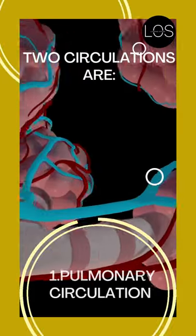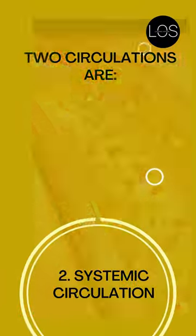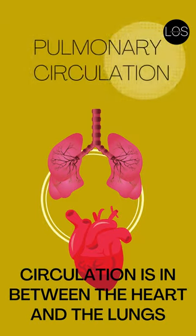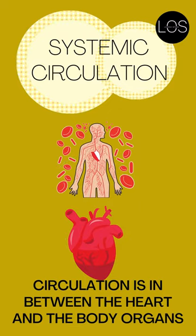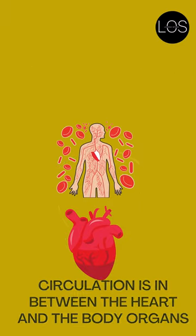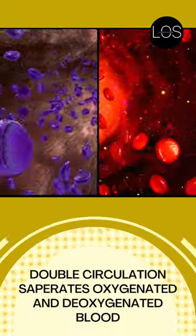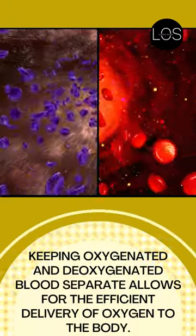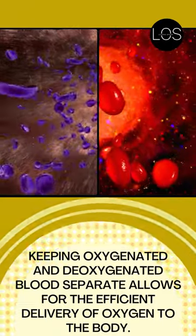The two circuits or circulations are pulmonary circulation and systemic circulation. Pulmonary circulation takes place between the heart and the lungs, and the systemic circulation is between the heart and the other body organs. Double circulation separates oxygenated and deoxygenated blood, allowing for efficient delivery of oxygen to the body.